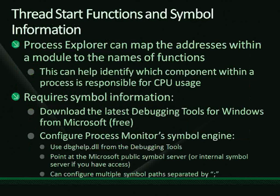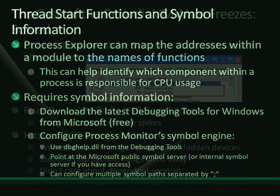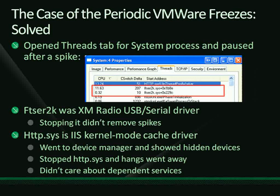I opened the System process and looked at the list of threads. The top thread by CPU usage began its life in http.sys — the in-kernel web server built into Windows — so I didn't suspect that as the real cause. The next one at 11% was 'ftser2k.sys,' which I didn't recognize. Looking at its file properties, I found it was the XM Radio USB serial driver.